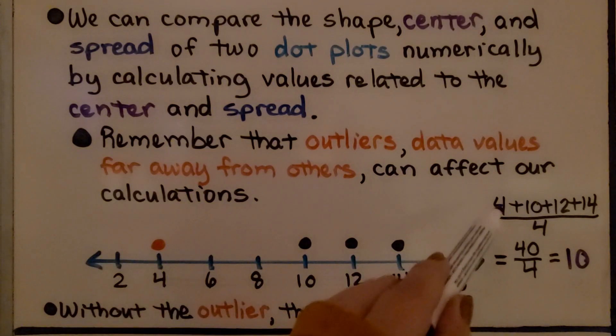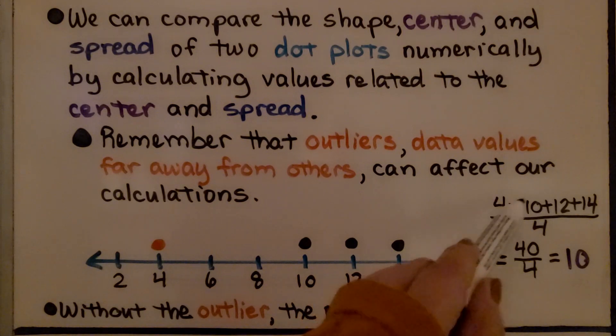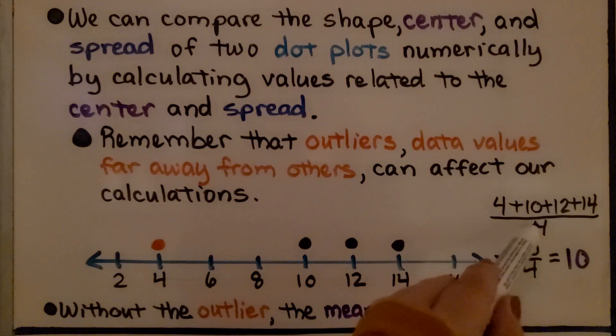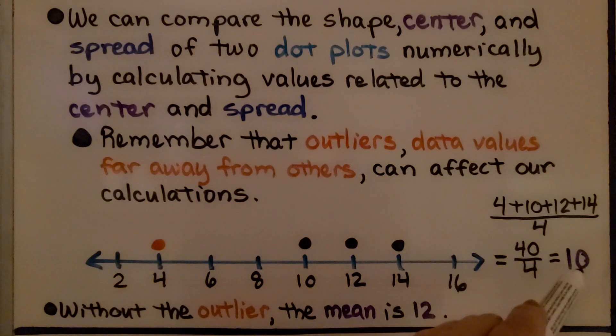What we do is we find 4 plus 10 plus 12 plus 14, and we divide it by 4. That's going to give us 10 for our average, our mean.